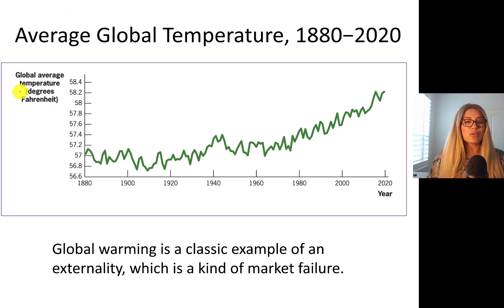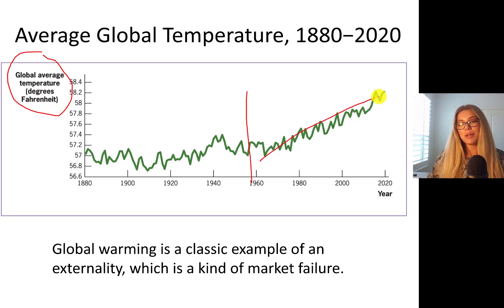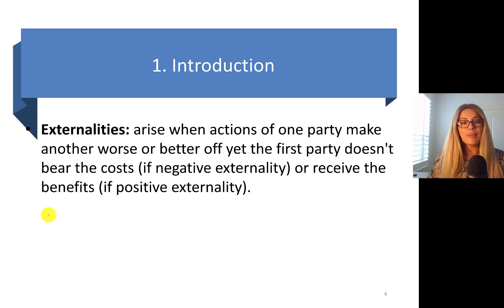Some people say it's just one, two, three degrees — who cares? This is in Fahrenheit, so it's really low in absolute terms, but this increase has been actually speeding up in the last couple of decades. Global warming is a classic example of an externality, which is a kind of market failure.